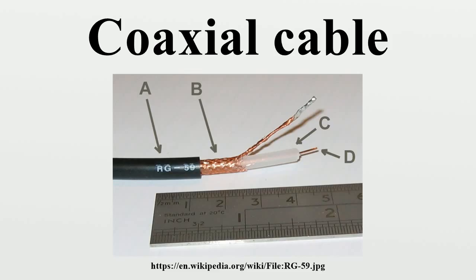The outer diameter is roughly inversely proportional to the cut-off frequency. A propagating surface wave mode that does not involve or require the outer shield, but only a single central conductor, also exists in coax, but this mode is effectively suppressed in coax of conventional geometry and common impedance. Electric field lines for this mode have a longitudinal component and require line lengths of a half-wavelength or longer. Coaxial cable may be viewed as a type of waveguide. Power is transmitted through the radial electric field and the circumferential magnetic field in the TEM00 transverse mode, which is the dominant mode from zero frequency to an upper limit determined by the electrical dimensions of the cable.